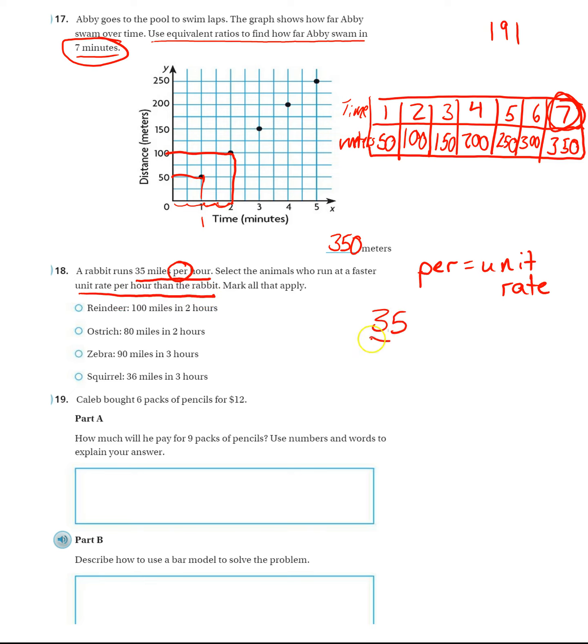So the rabbit is 35 to 1. We need to check all these and see if they are faster than 35 miles. Basically, if this number is bigger than 35 once we get it down to 1. So if we have 100 to 2, that's our first one, the reindeer, and we make it a unit rate, divide by 2, divide by 2. 2 divided by 2, that's how I get my 1. So I know I have to divide the top by 2. 100 divided by 2 is going to be 50. So since the top number is bigger than what the rabbit had, 35, then yes indeed, the reindeer is faster.